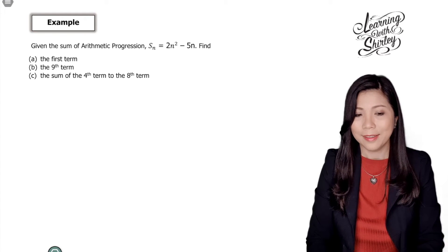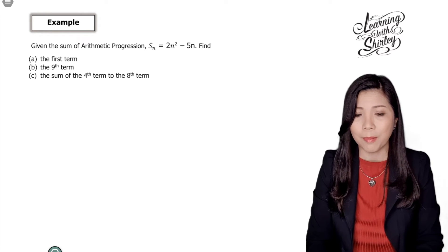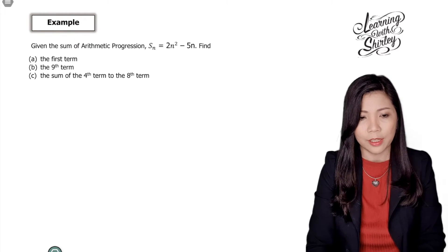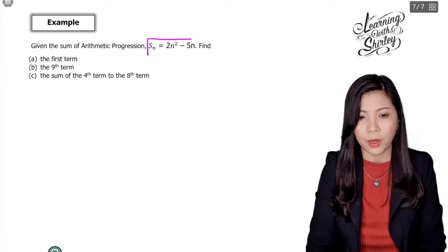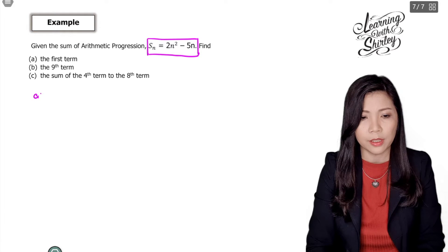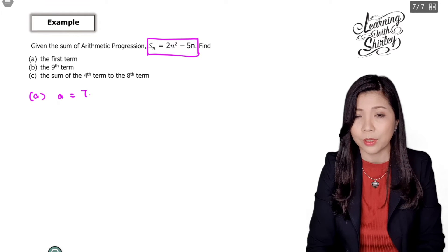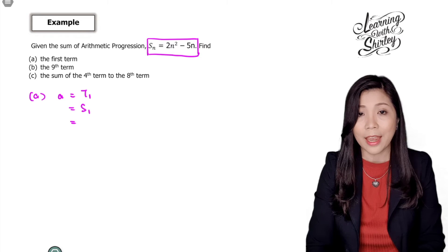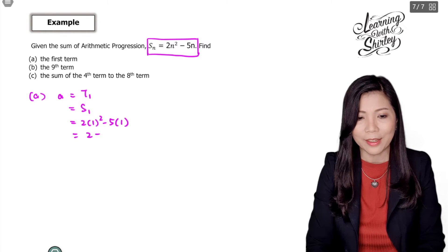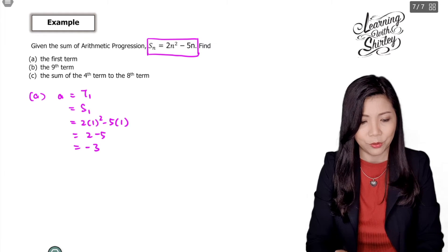Let's look at this example. Given the sum of an AP: Sn equals 2n squared minus 5n. Find (a) the first term, (b) the nth term, and (c) the sum of the fourth term to the eighth term. To find the first term, we know t1 equals S1. Substituting n equals 1: 2 times 1 squared minus 5 times 1 gives 2 minus 5, which equals negative 3. So a equals negative 3.